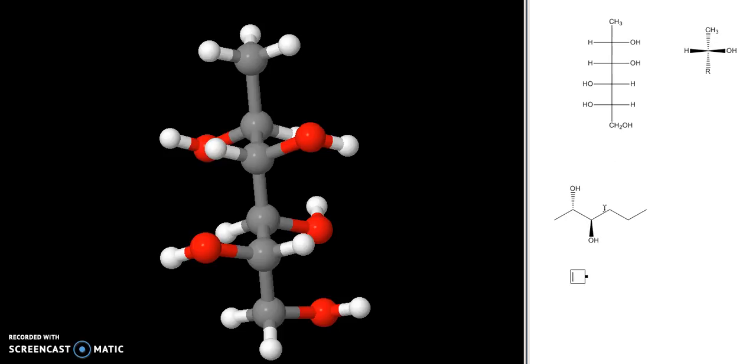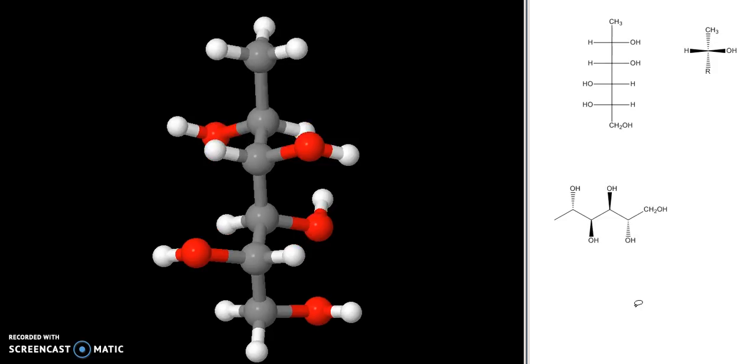And I could continue this procedure for the next two carbons, remembering that for this one, I have to look at it from the top, and this one, I have to look at it from the bottom. And if we continue to do that for the rest of the molecule, we end up with something like this. Now, if you have a hard time visualizing it the way that I just described, there is another way that you can do this. And it boils down to assigning the stereochemistry in your Fischer projection.